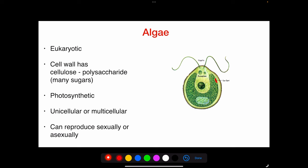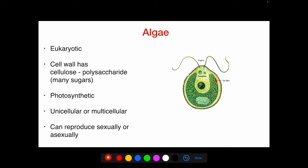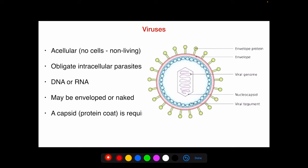Algae are eukaryotic. Their cell wall contains cellulose, a polysaccharide made up of many sugars. They are photosynthetic, using sunlight to make their own food. They can be unicellular or multicellular and reproduce either sexually or asexually. Viruses are acellular microorganisms — non-living, obligate intracellular parasites. They are either DNA or RNA viruses, may be enveloped or naked, and have a protein coat called the capsid.